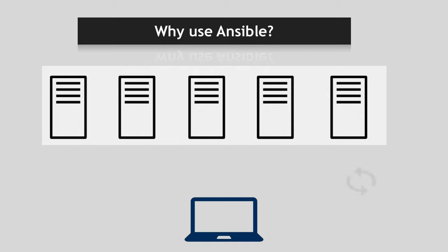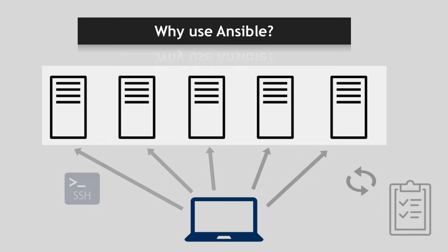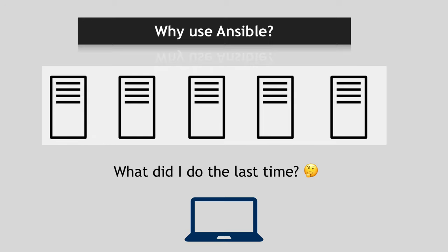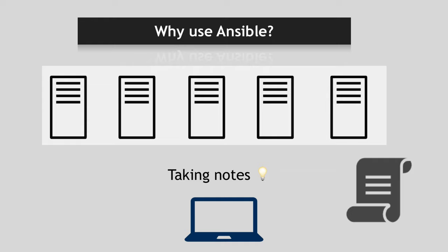And every time this configuration, upgrade, or deployment needs to happen again, you need to start from scratch and go through the whole process again — especially if it involved multiple steps, you have to remember exactly what you did last time. One approach I've personally seen is that people write notes and document in Confluence pages all the things they configured or changed on servers to deploy an application or install certain software, so they can remember it when needed again.